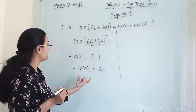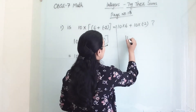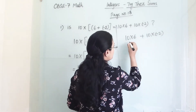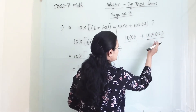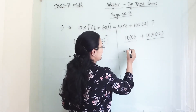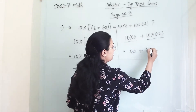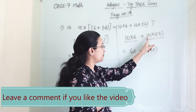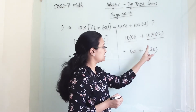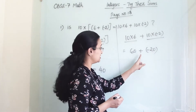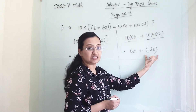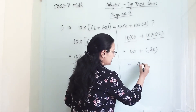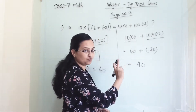So our final answer from the left side is 40. Now moving towards the right side: 10 into 6 plus 10 into minus 2. We solve each part first and then add them. We get 60, plus we get minus 20 — because one negative sign is there, so negative times positive gives us negative answer, so minus 20. Now 60 is plus but 20 is minus, so we do subtraction and the answer is 40. The answer carries the bigger number sign, so it is plus 40.